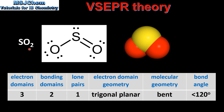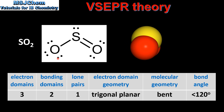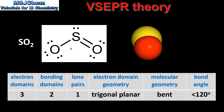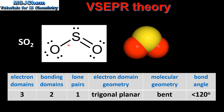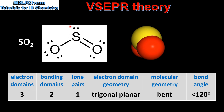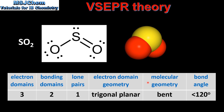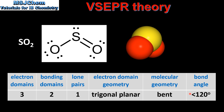Next we look at SO2, which is sulfur dioxide. Here is the Lewis structure of SO2. It has 3 electron domains around the sulfur atom — 2 bonding domains and 1 lone pair of electrons. The electron domain geometry is trigonal planar, the molecular geometry is bent, and the bond angle is less than 120 degrees because of the extra repulsion from the lone pair of electrons on the sulfur atom.